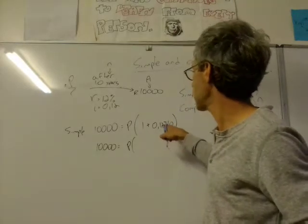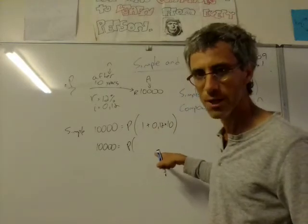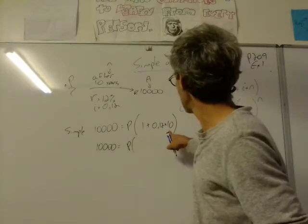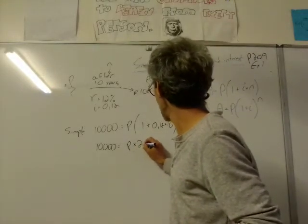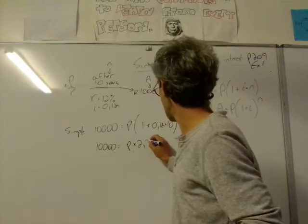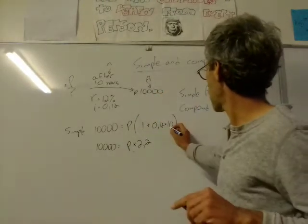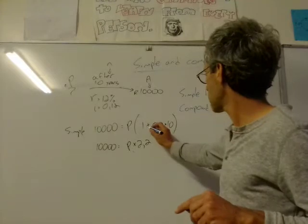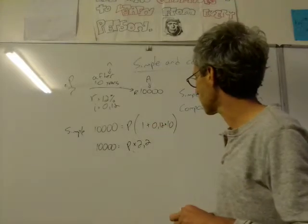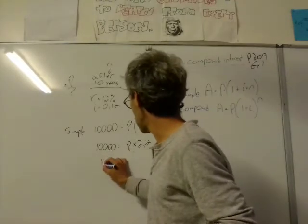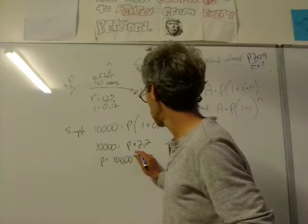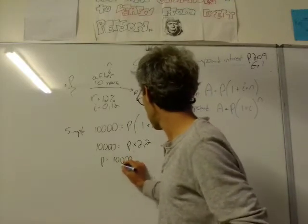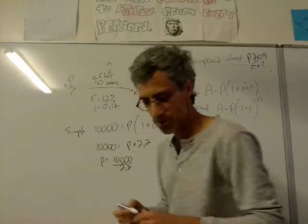You have to work the brackets. So 0.12 times 10 is 1.2. 1.2 plus 1 will be 2.2. I just want to make sure I got it right. 1.2 plus 1 is 2.2. Now we want to find our P. 10,000 divided by 2.2. For that, we need the calculator.